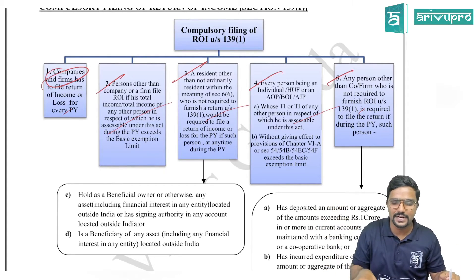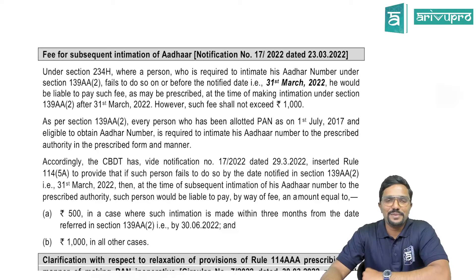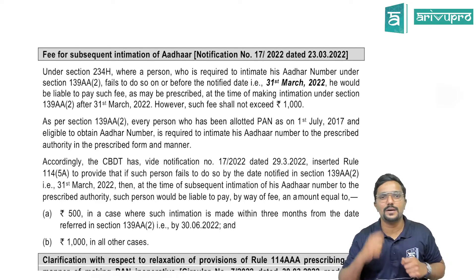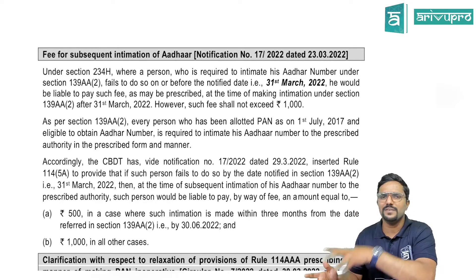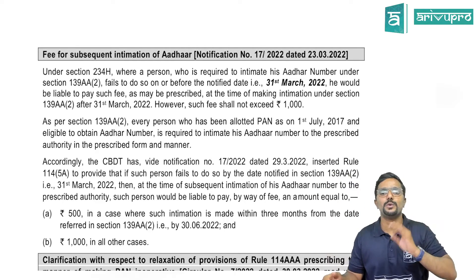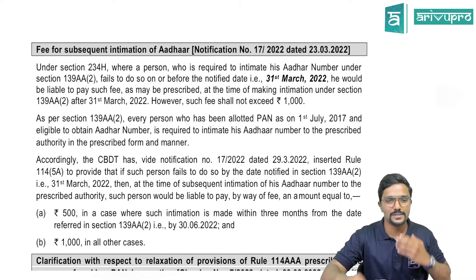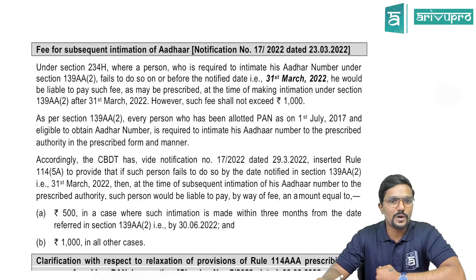Next: fee for subsequent intimation of Aadhaar. Assessees are asked to intimate their Aadhaar or link Aadhaar with PAN for the purpose of income tax so the department can track transactions. The due date to link Aadhaar with PAN was extended to 31st March 2022. Under Section 234H, where a person who is required to intimate their Aadhaar number under Section 139AA(2) fails to do so on or before the notified date, they would be liable to pay a fee at the time of making subsequent intimation.